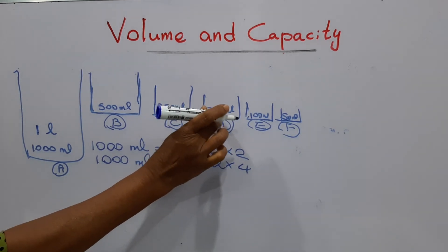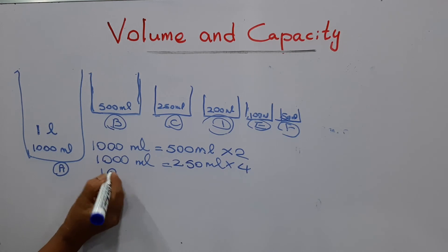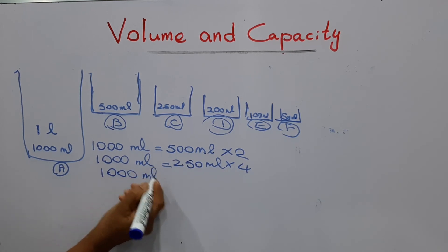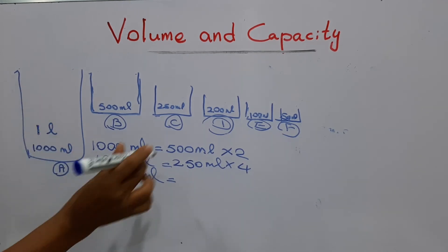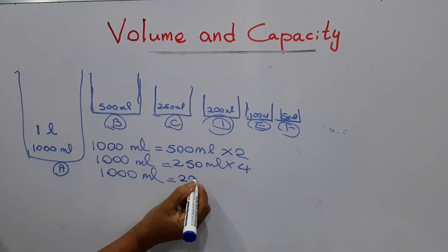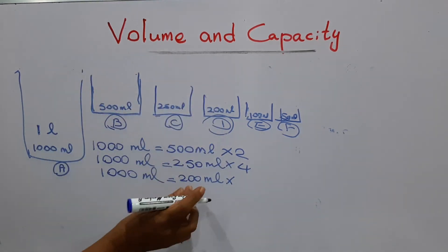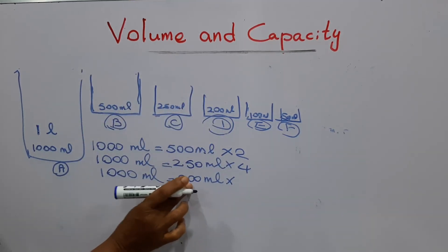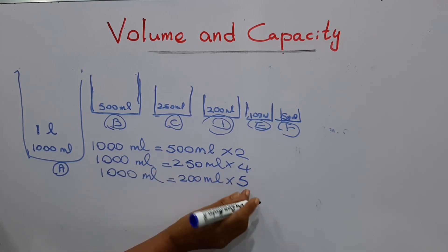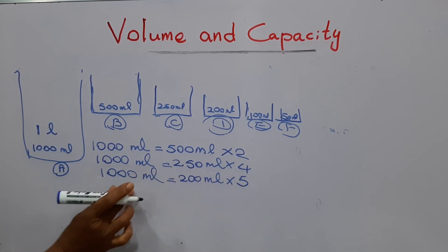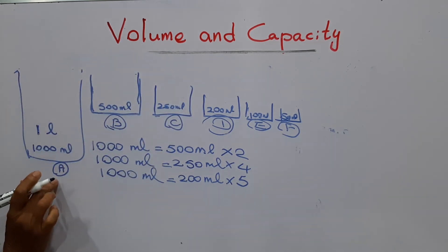That is the D container. Its capacity is two hundred milliliters. How many times do we have to put water to fill the one-liter container? That means how many two hundreds are in one thousand. Five times — we can fill this container five times.